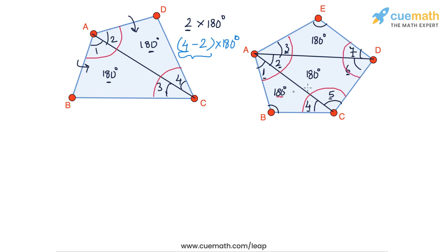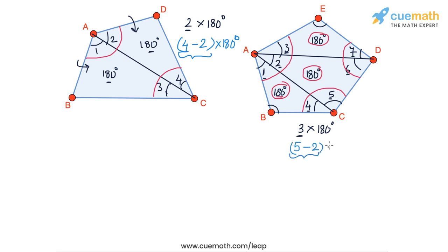Adding all the angles from the three triangles gives us angle A plus angle B plus angle C plus angle D plus angle E, since angles 1, 2, and 3 add up to angle A, angles 4 and 5 add up to angle C, and angles 6 and 7 add up to angle D. The numerical value is 180 plus 180 plus 180, which is 540 degrees — that is 3 into 180 degrees. The number 3 comes from 5 sides minus 2, giving us the number of triangular parts.